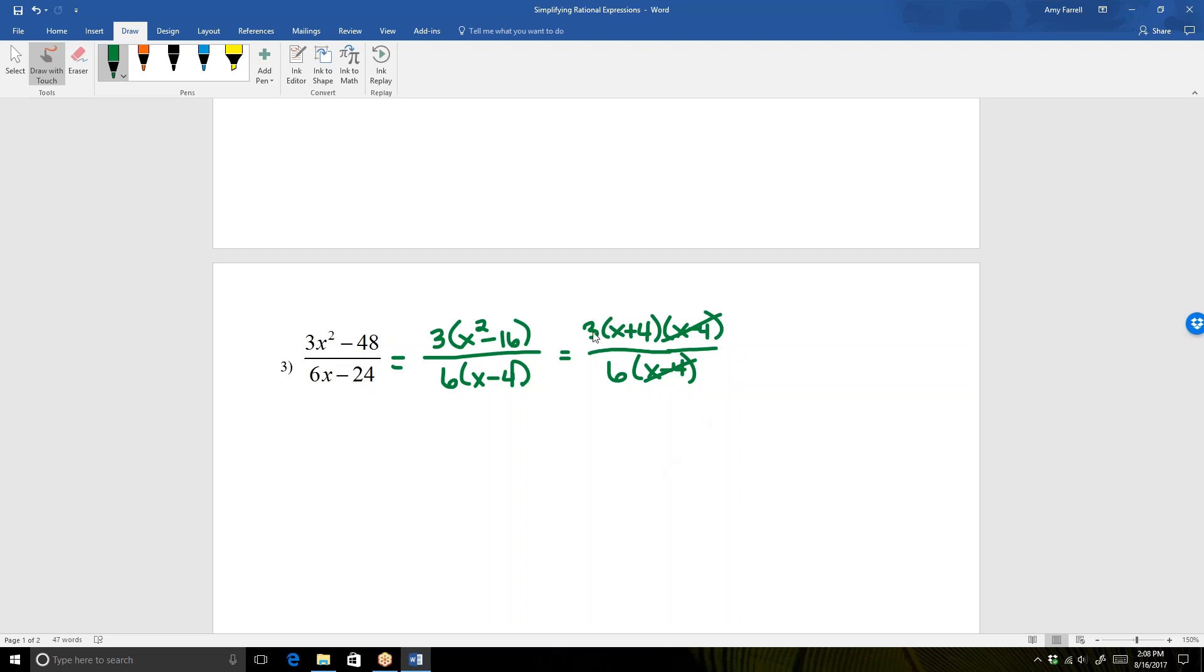I can also reduce the 3 and the 6. 3 and 6 have a common factor of 3. So I'm going to divide 3 by 3 to get 1, and I'm also going to divide 6 by 3 to get 2. So my final answer for this problem is x plus 4 over 2.